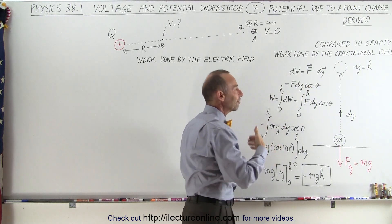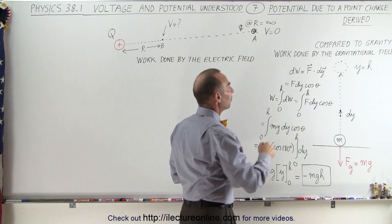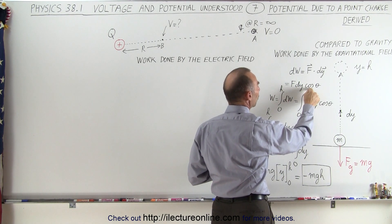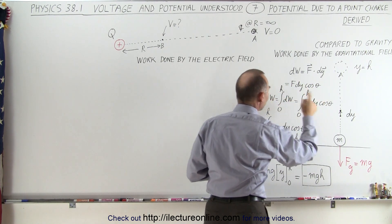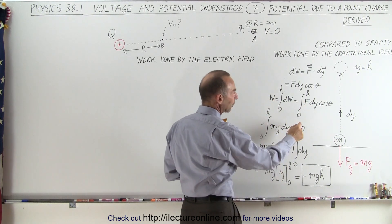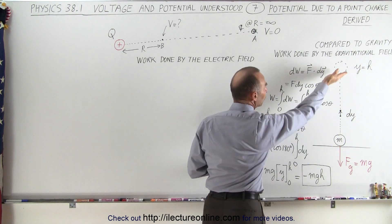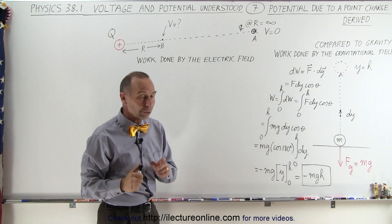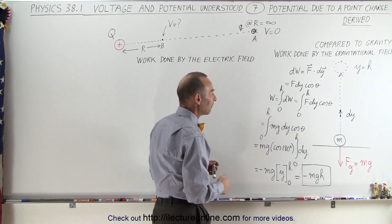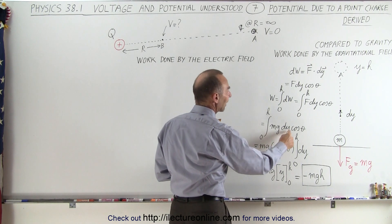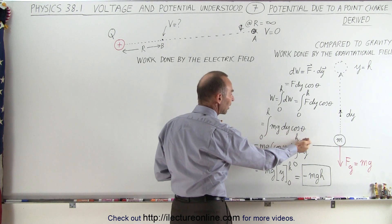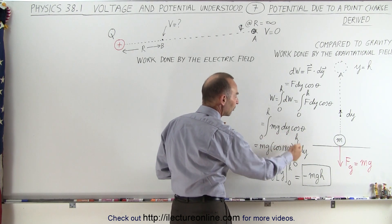Notice this is a dot product, so it's F dot dy. Since F dot dy can be written as the magnitude of F times the magnitude of dy times the cosine of the angle between them theta, we can now define work done as the integral of the dW's, which is the integral of F dy times the cosine of theta, integrated from y equals 0 to y equals h. We know that the force due to gravity is equal to mg, so we have mg dy times cosine of theta. Since mg and cosine of theta are constants, they can move outside the integral sign — simply the integral from 0 to h of dy.